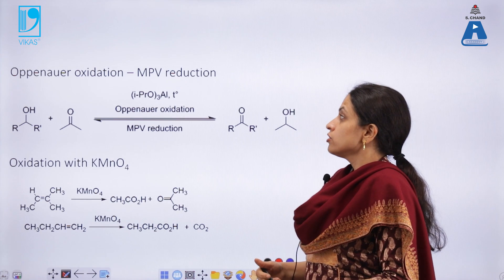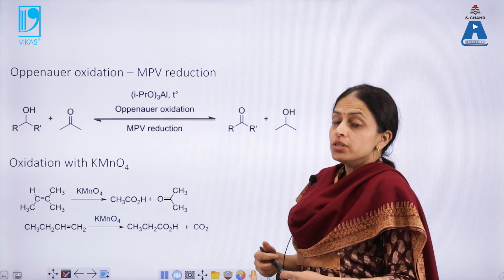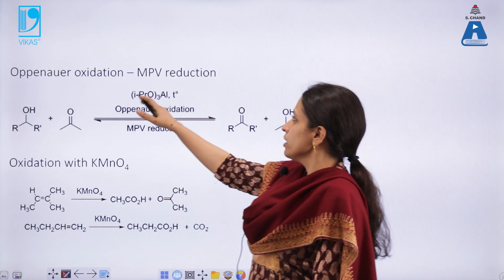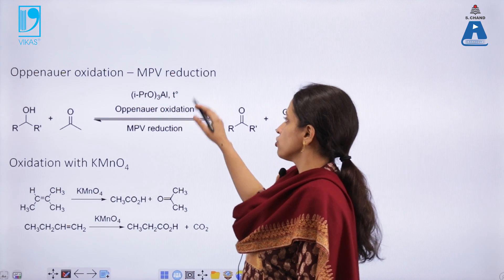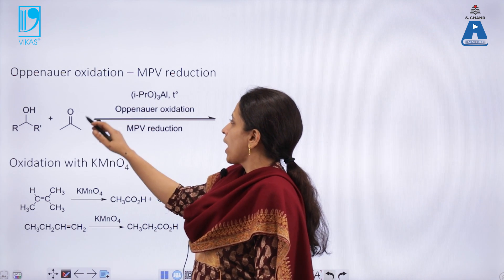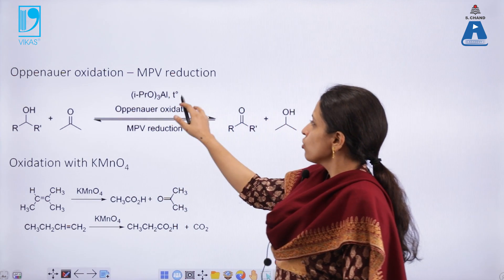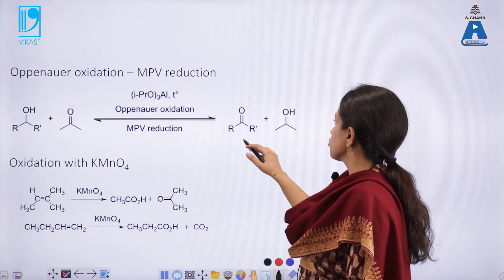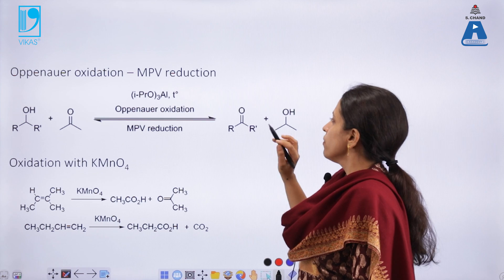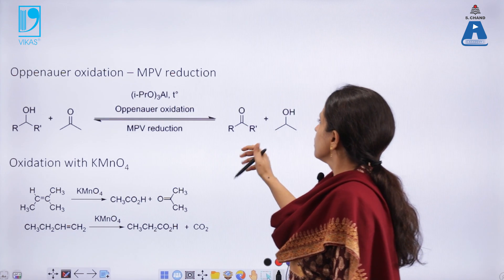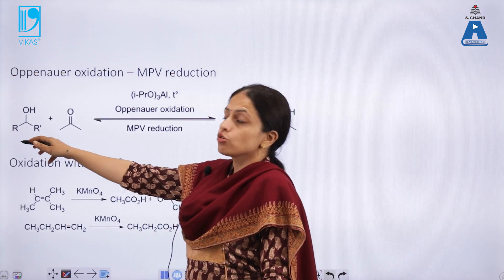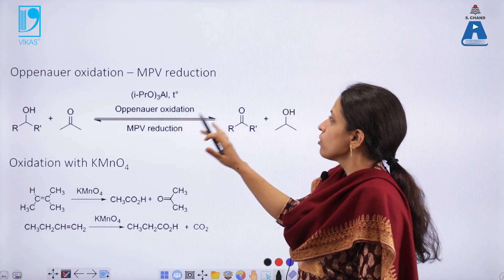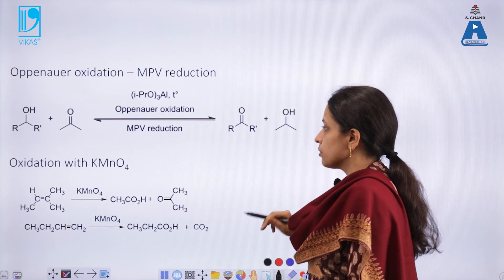Another important oxidation process is Oppenauer oxidation, which is paired with the reversible Meerwein-Ponndorf-Verley (MPV) reduction. In the presence of acetone and aluminum isopropoxide, secondary alcohols are oxidized to the corresponding ketones. In the reverse MPV reaction, the ketone is reduced back to the corresponding alcohol. This is another important redox reaction in organic chemistry.